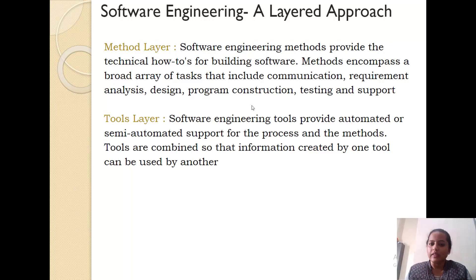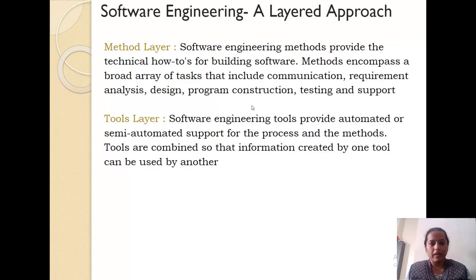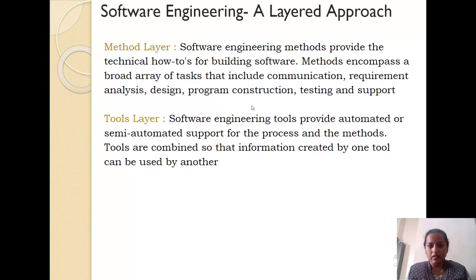Above this is the last layer, called the tools layer. You know what is to be done and you know how to do it, but for doing the actual task you are going to require some tools. Those automated and semi-automated tools are categorized into the tools layer. It provides automated and semi-automated support for the process as well as the methods. Tools are combined together so that information created by one tool can be used by another. For example, if you are in the planning phase and have prepared a planning document, that document will be used by your designing team to design their product, and the same plan will be used as input for your construction team, which will be coding based on the deadlines and milestones to be achieved. Everything is interrelated and that flow is bounded together with the help of the tools layer.